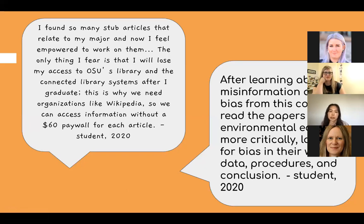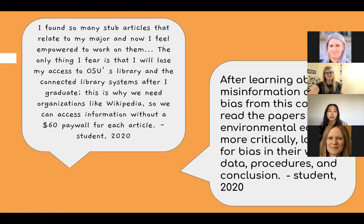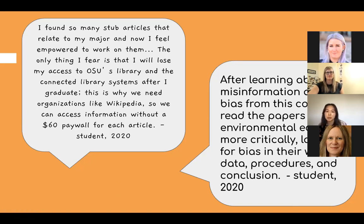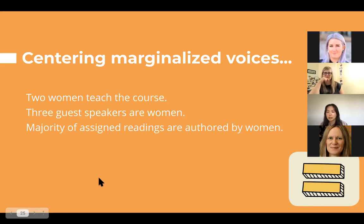These are from two student reflections from last year. One said: 'I found so many stub articles that relate to my major, and now I feel empowered to work on them. The only thing I fear is I will lose my access to OSU's library and the connected library systems after I graduate. This is why we need organizations like Wikipedia so we can access information without a $60 paywall for each article.' I felt that comment from the student concisely wraps up the importance of Wikipedia, of having open access and other sources of open access information beyond the scholarly publishing landscape. As an instructor, reading that from a student — it just affirms our belief in why this is important.